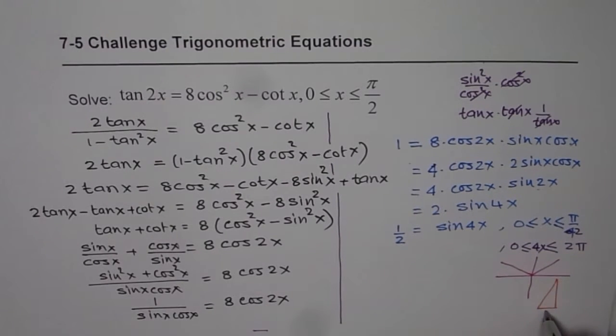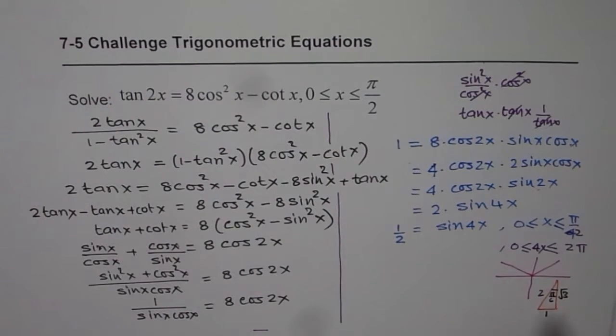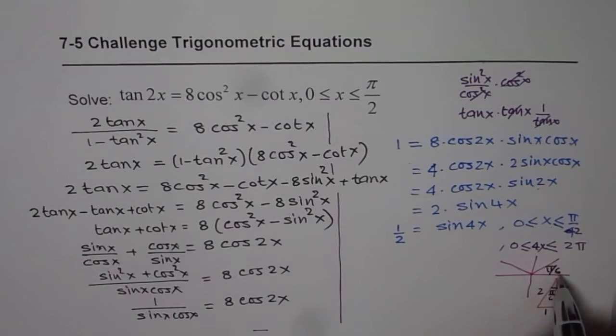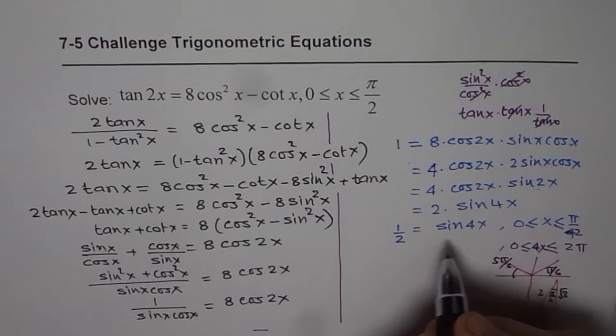You can use your calculator or you can use special triangles. Let me draw the special triangle just to remind you. This side is 1, this is 2, this is square root of 3 when the angle is pi by 6. So for pi by 6 we have sine theta as half. This will be pi by 6, so this is 5 pi by 6.